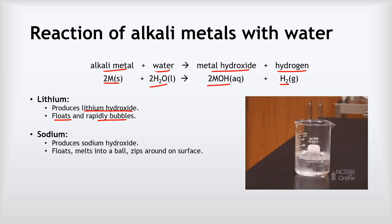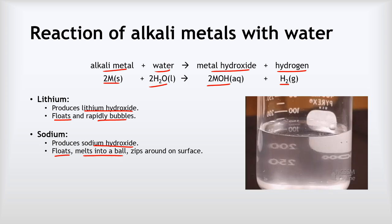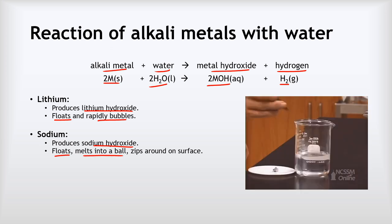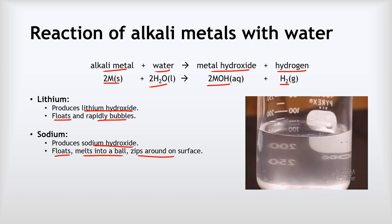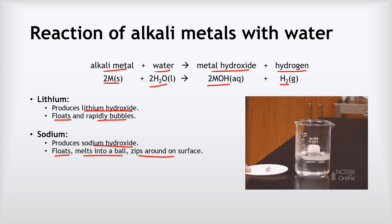With sodium, the metal hydroxide this time it makes is sodium hydroxide, and the observations for it are that it floats again. This time it melts into a ball because it gets so hot as it's reacting really quickly, and it zips around on the surface. And you can see all those observations there in that little video on the right. If you look really carefully, the way the metal's melted into a ball and it's zipping around on the surface.